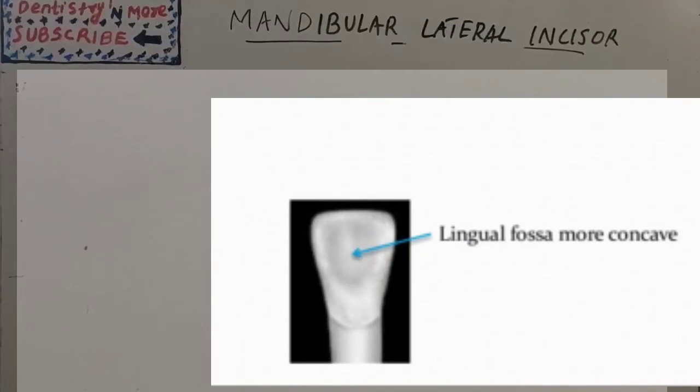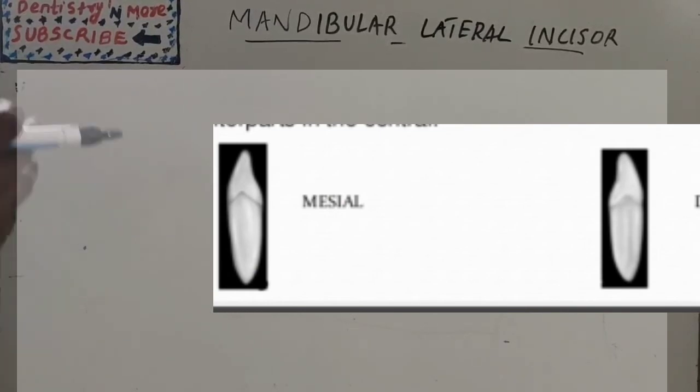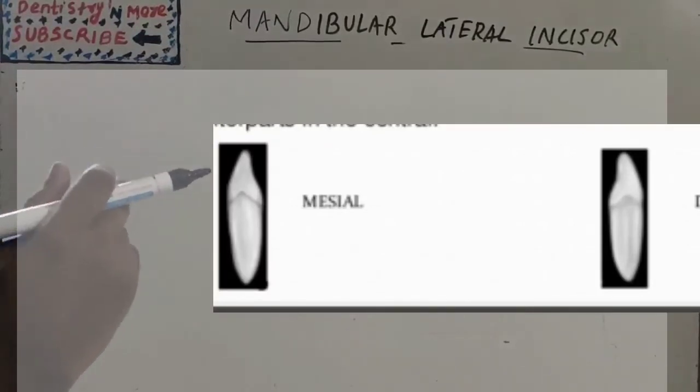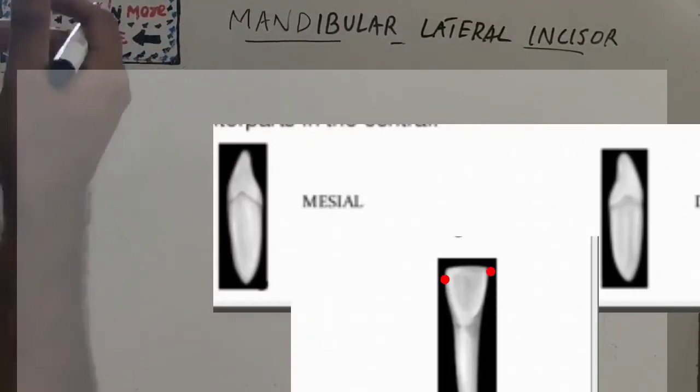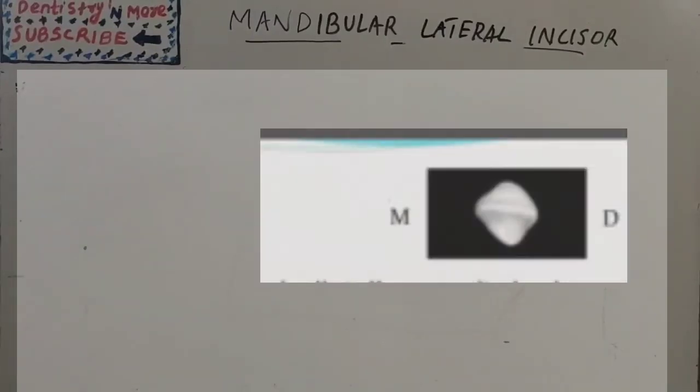Regarding the mesial and distal aspect, the two surfaces are similar to their counterparts on central incisor with a few minor exceptions. The lateral's distal surface is slightly shorter incisocervically than the mesial surface. Both cervical line curvatures are slightly lesser than their counterparts in the central incisor. The mesial cervical line shows greater incisor curvature than the distal. A distal contact area height of contour is more cervically located than on mesial in incisal third. The distal contact area is very near to the junction of incisal and middle third and is most cervically located of any mandibular incisor contact.